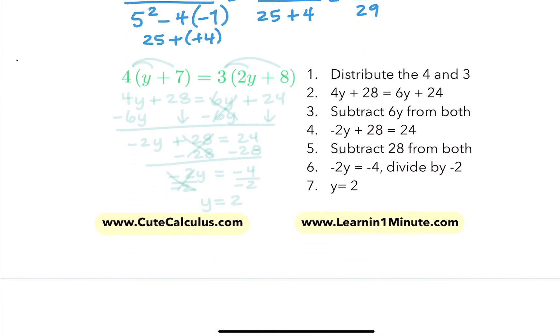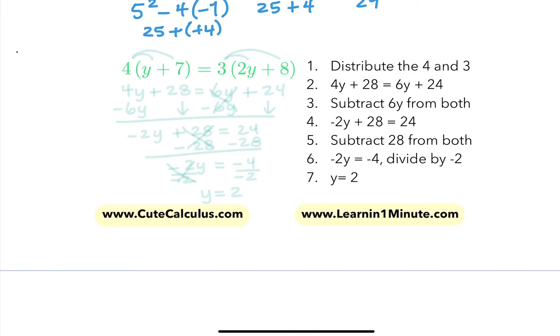For this final problem, we're solving this equation. We need to distribute the 4 to both terms, and then this 3 to both terms for our first step. We can't do anything with parentheses like this, so we have to do that distribution first. So we'll get 4y plus 28 equals 6y plus 24.